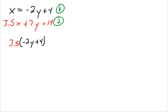And then plus 7y equals 14. Now using simplification and solving, we're just going to figure out what y is. So 3.5 times negative 2y is negative 7y. 3.5 times 4, I believe, is 14 plus 7y equals 14.